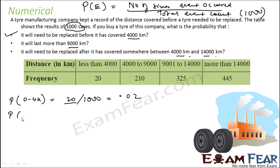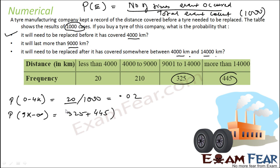Similarly, it lasts for more than 9,000 kilometres — that is 9,000 kilometres to end, there is no upper limit. So this is nothing but 325 plus 445. These two are the events where the tyre was replaced after 9,000 kilometres, divided by total event count that is 1,000. That is 770 by 1,000 and that is 0.77.